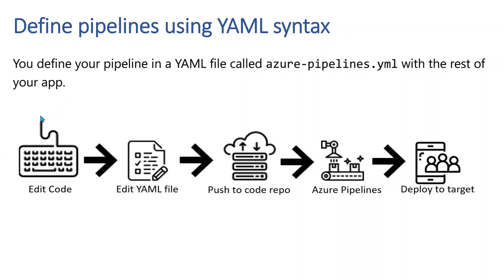You can define pipelines using YAML syntax. YAML means 'Yet Another Markup Language', and your pipelines will most commonly evolve around YAML. You need to understand YAML in order to master pipelines as it is very popularly used. You define your pipeline in a YAML file called 'azure-pipelines.yml' with the rest of your app. What actually happens is you integrate your code with your pipeline — you edit that YAML file, push it to your version control repo, it triggers your Azure Pipelines, and finally deploys to the target.